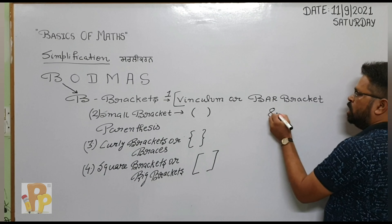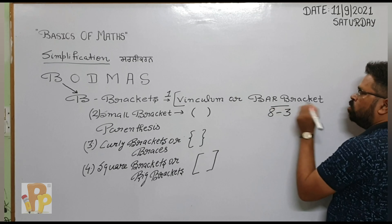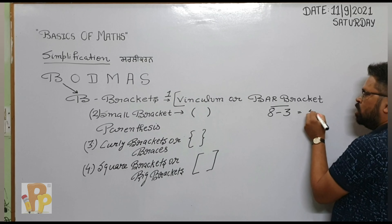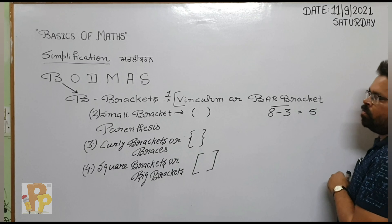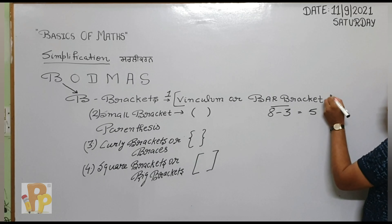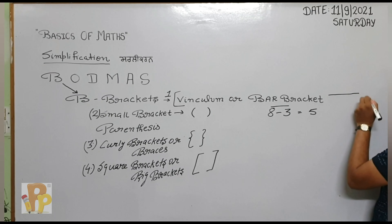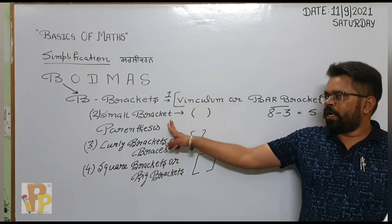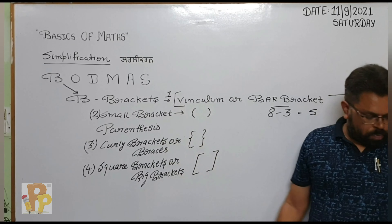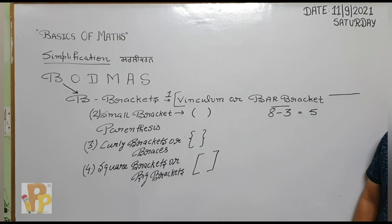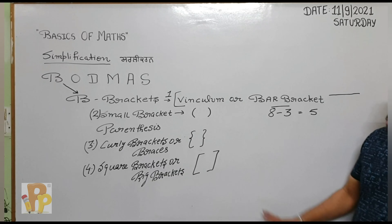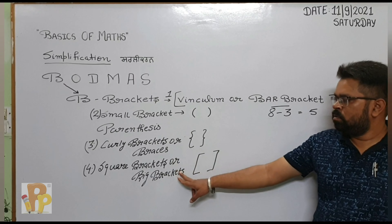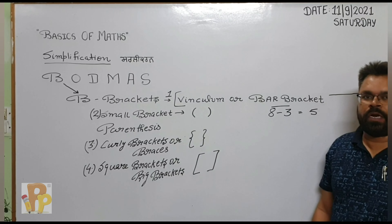जैसे मैं example लेलता हूँ — 8 minus 3, उपर bar लगा हुआ. That is vinculum or bar bracket, जिसका answer क्या जाएगा? 5. Small bracket, also called parentheses — that is this one. Curly brackets, braces. And square brackets or big brackets.